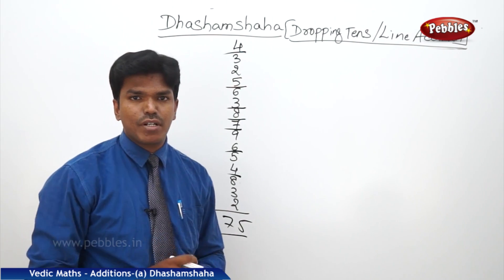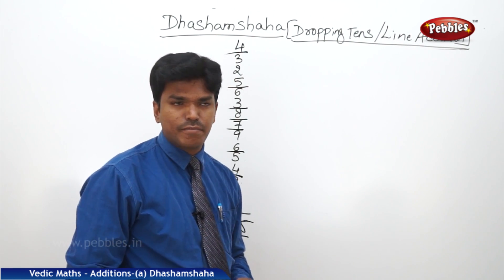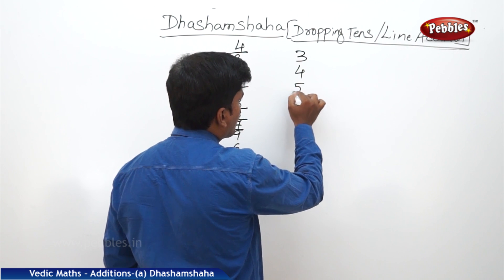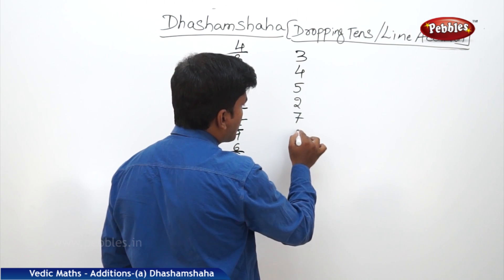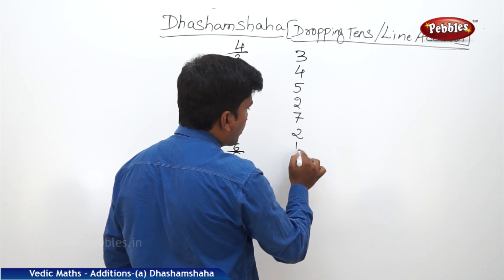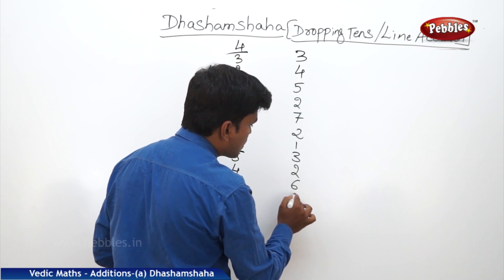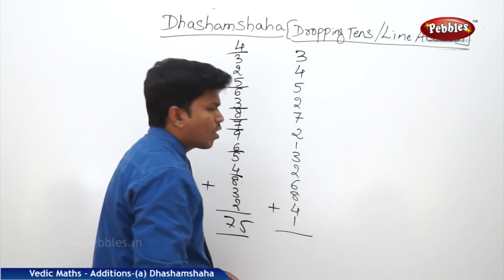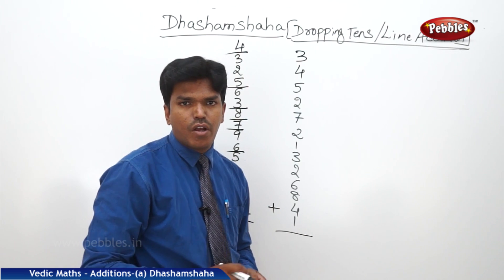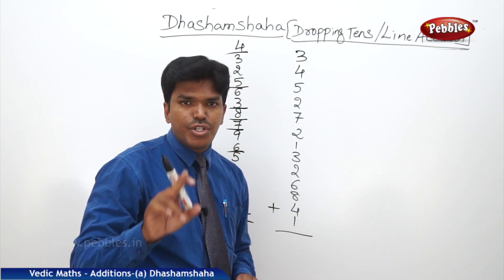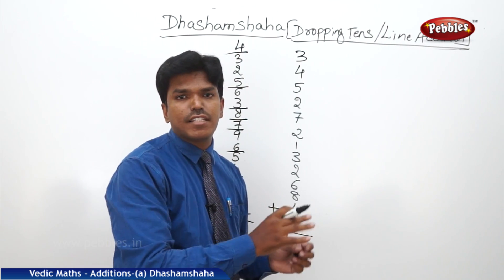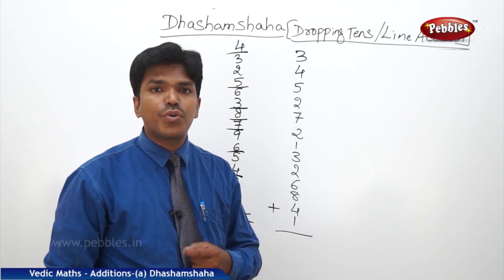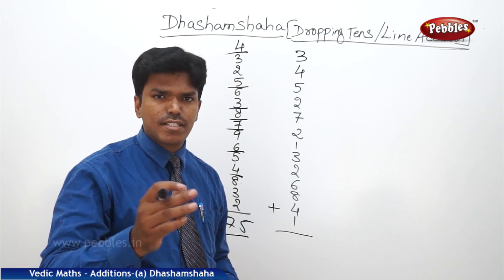Let's take one more example: 3, 4, 5, 2, 7, 2, 1, 3, 2, 6, 8, 4, 1. Now I want to add these numbers. In general, you will take a lot of time to add these numbers. But by using our method, we are going to do it within less time. Now let us start — start from the bottom.